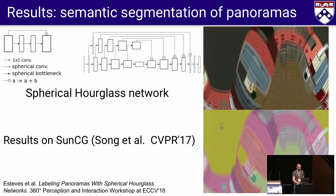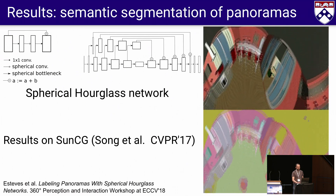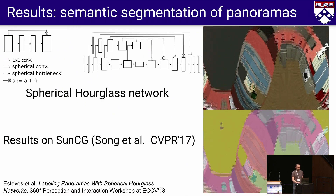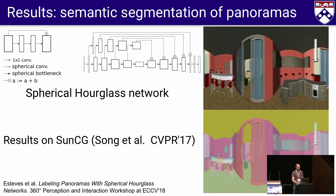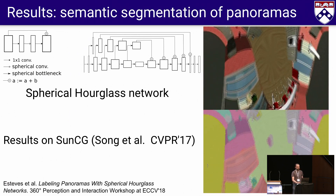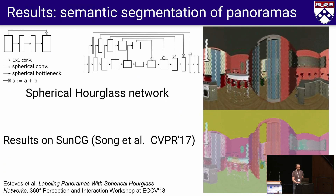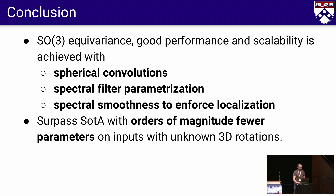Our lightweight model scales to larger input dimensions and more challenging problems such as dense labeling. Using residual bottleneck layers, we are able to replace some expensive spherical convolutions by cheaper one-by-one convolutions and also use fewer channels without reducing performance. Note how our equivariant model produces roughly the same output no matter the viewpoint. The main takeaway is that SO3 equivariance, good performance, and scalability can be achieved with spherical convolutions and spectral filter parameterization with enforced smoothness. We have shown applications to shape classification, retrieval, alignment, and panorama segmentation, where we match or surpass the state of the art with orders of magnitude fewer parameters when perturbed with arbitrary rotations.